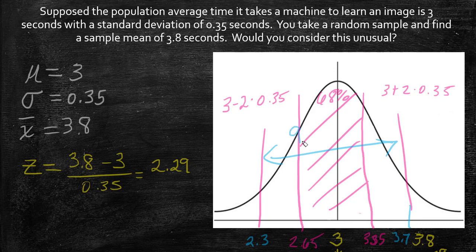That's 95% of your data. As you can see, this makes sense because 3.8 is a little bit more than 2 standard deviations.